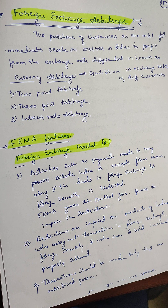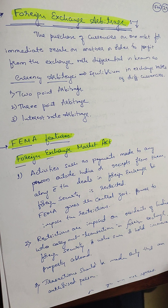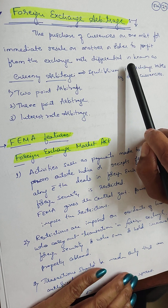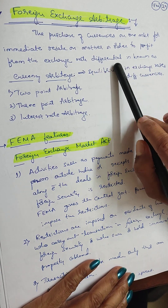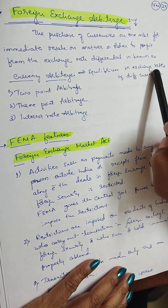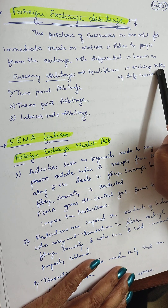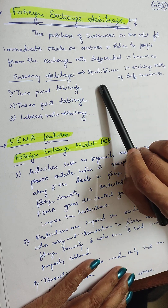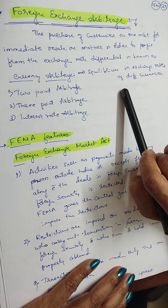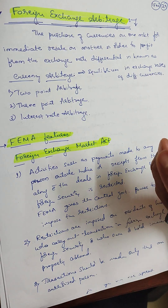Foreign exchange arbitrage is the purchase of currencies on one market for immediate resale on another in order to profit from the exchange rate differential — known as foreign exchange arbitrage. There are three types of arbitrage: two-point arbitrage, three-point arbitrage, and interest rate arbitrage.